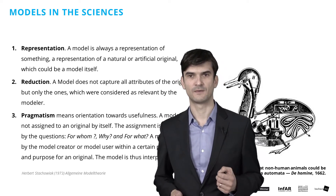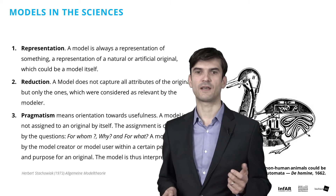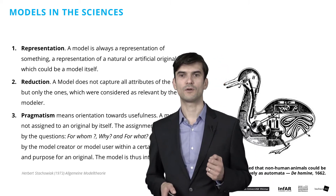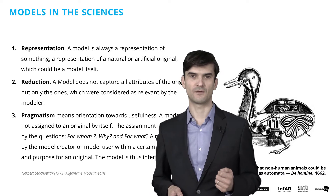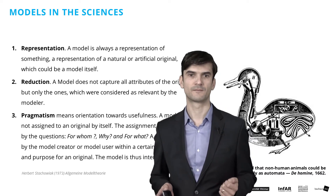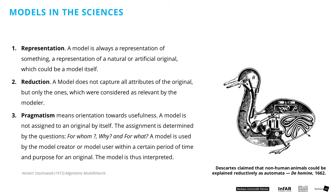Second: reduction. A model does not capture all attributes of the original, but only the ones which were considered as relevant by the modeler. Third: pragmatism — meaning orientation towards usefulness. A model is not assigned to an original by itself; the assignment is determined by the questions of for whom, why, and for what. A model is used by the model creator or model user within a certain period of time and purpose for an original. The model is thus interpreted.